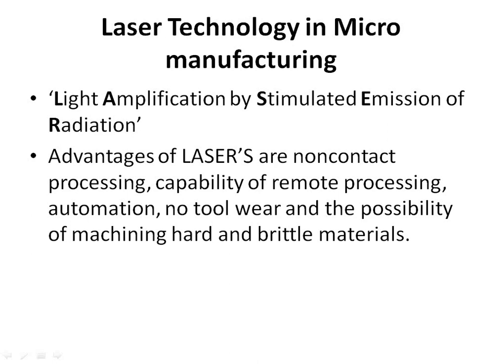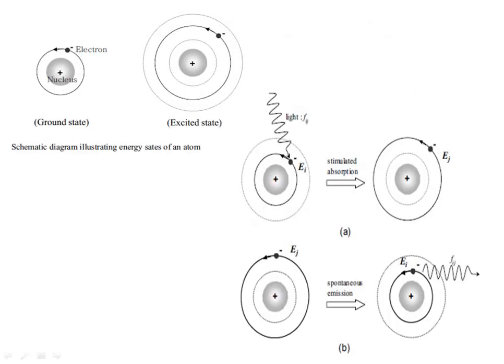Laser Technology in Micro Manufacturing. LASER stands for Light Amplification by Stimulated Emission of Radiation. Advantages of lasers include non-contact processing, capability of remote processing, automation, no toolware, and the possibility of machining hard and brittle materials. A laser is created when electrons in atoms in special glasses, crystals or gases absorb energy from an electrical current or another laser and become excited, moving from a lower energy orbit to a higher energy orbit around the atom's nucleus. When they return to their ground state, the electrons emit photons. These photons are all at the same wavelength and are coherent, meaning the crests and troughs of the light waves are all in lockstep. Ordinary visible light comprises multiple wavelengths and is not coherent.